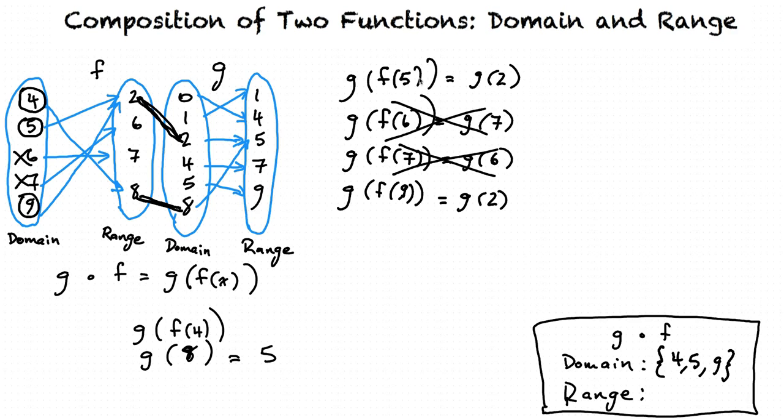Now we will do the same for our other two values in our domain of f. g of f of 5: we see that f of 5 equals 2, so we're finding g of 2, which equals 5. And then the same thing here, f of 9 equals 2, so we're finding g of 2, which equals 5.